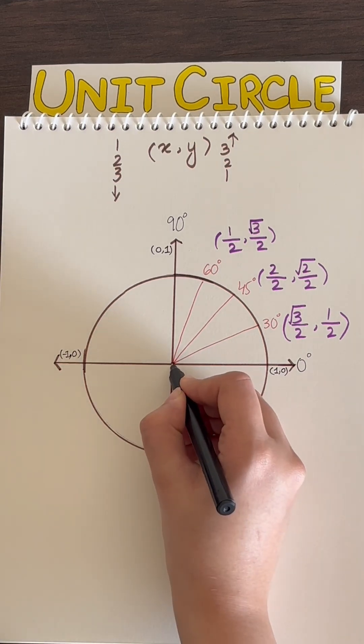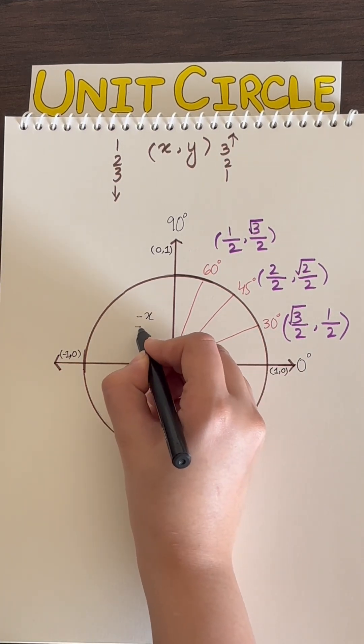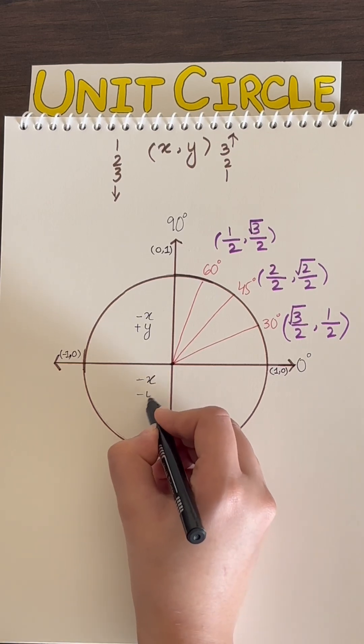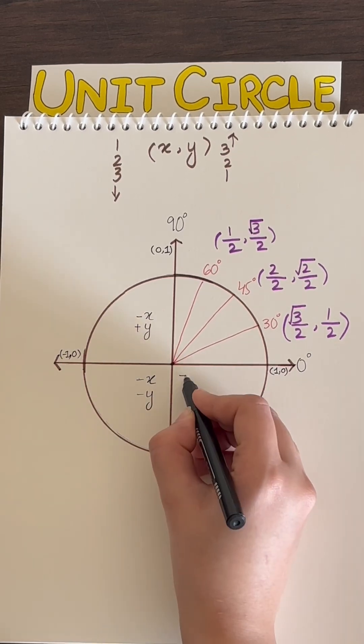Traveling from the center out, we get negative x, positive y here, negative x, negative y over here, and positive x, negative y here.